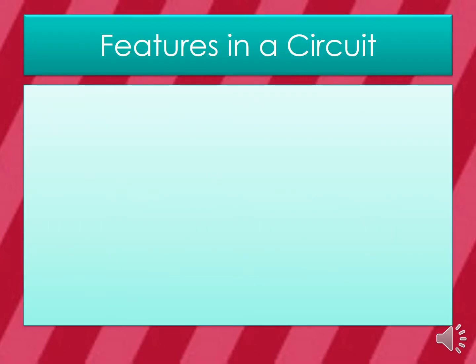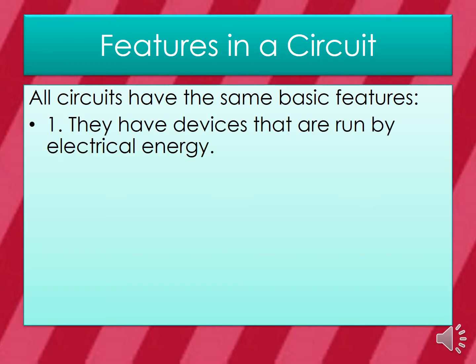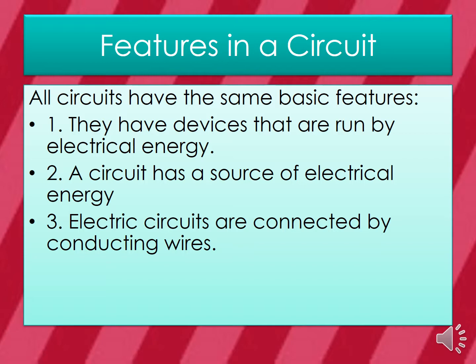What are some features of a circuit? All circuits have the same basic features. One, they have devices that are run by electrical energy. Two, a circuit has a source of electrical energy. And three, electric circuits are connected by conducting wires.